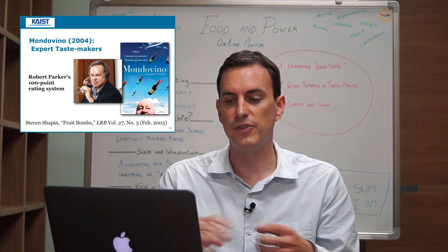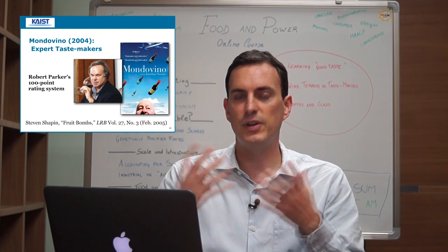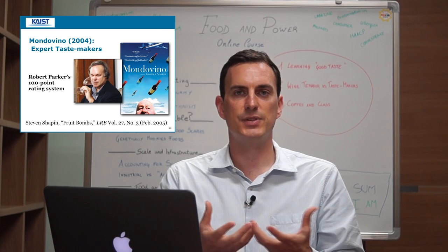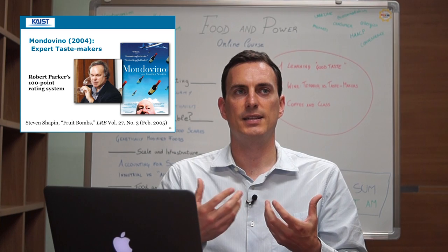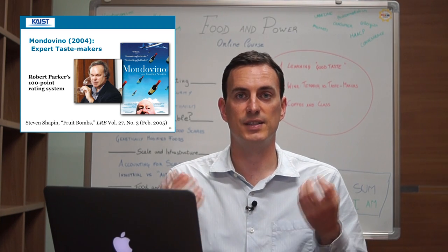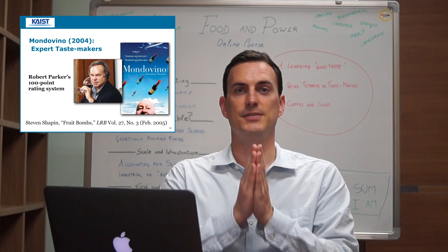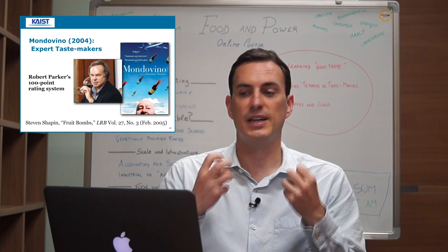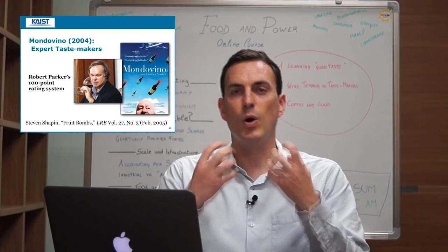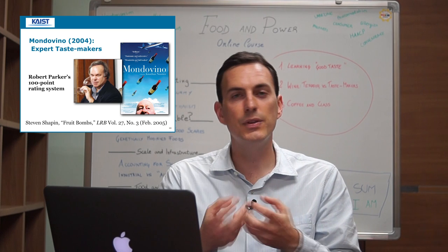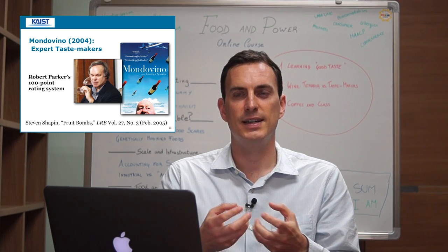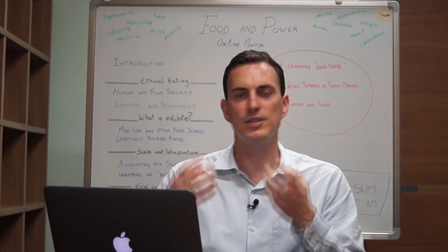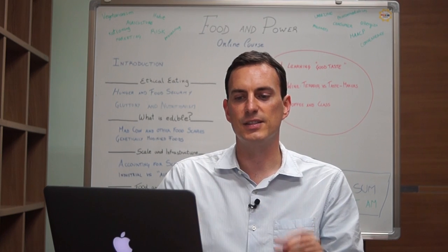There is a documentary called Mondovino, and in Mondovino they argue that Bob Parker and these taste makers' influence on the American market has started creating pressure on more traditional winemakers to conform to particular standards of taste — standards that aren't necessarily traditional. Bob Parker is famous for liking oaked wines, which tend to hide the youth of a red wine, so one criticism is that he's favoring new producers who create young, cheaper wines instead of older, more characterful wines.